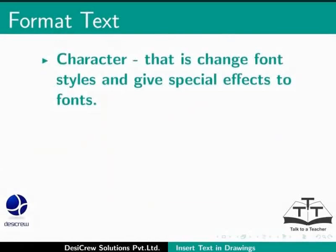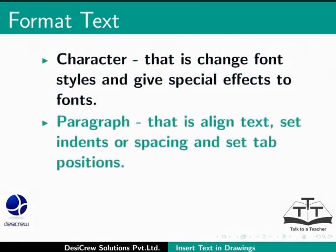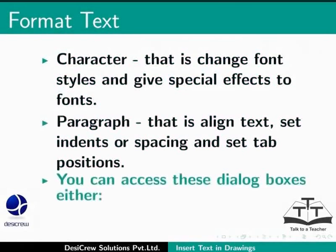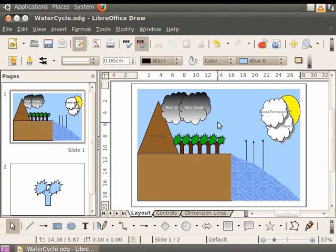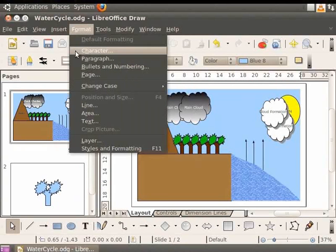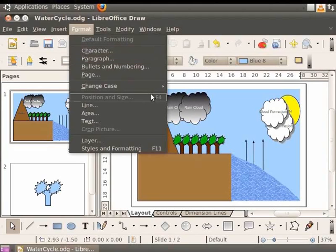You can format text for Character — that is, change font styles and give special effects to fonts. You can also format text for Paragraph — that is, align text, set indents or spacing, and set tab positions. You can access these dialog boxes either from the context menu or from the main menu. To access the Character dialog box from the main menu, select Format and select Character. To access the Paragraph dialog box, select Format and select Paragraph.